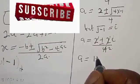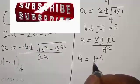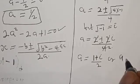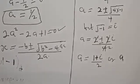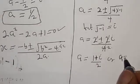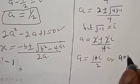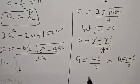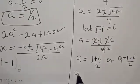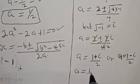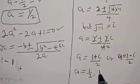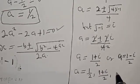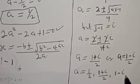Therefore a equals 1 plus i over 2, or a equals 1 minus i over 2. So the roots of the equation are: a equal to 1 over 2, a equal to 1 plus i over 2, and a equal to 1 minus i over 2.